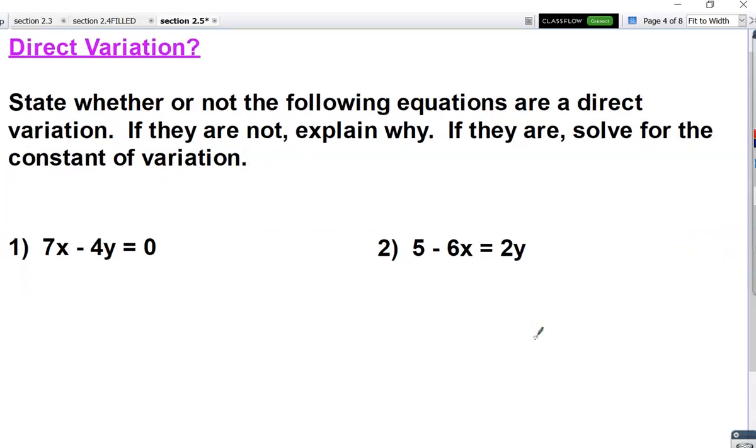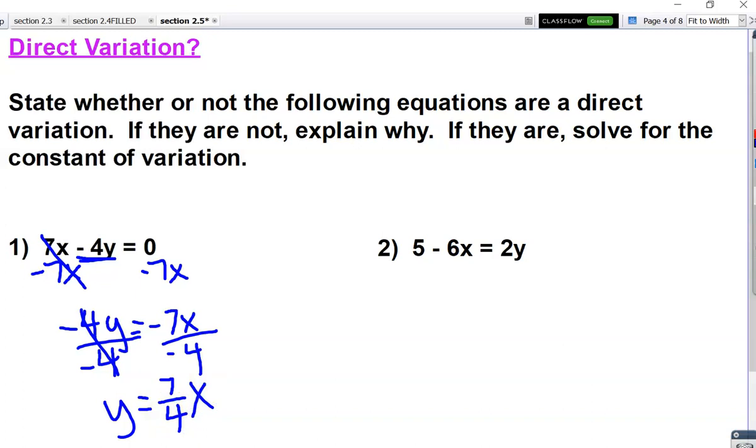Another thing you'll be asked to do is figure out, do I have a direct variation model or do I not? So for both of these questions, first figure out, is it direct variation? And if it is not, say why. If it is, solve for the constant of variation. So for both of these questions, you're basically just solving for y. So I'm going to subtract 7x from both sides. Don't forget the negative sign, because we were subtracting 4y. 0 minus 7x is negative 7x. I'm going to divide both sides by negative 4. Two negatives will cancel. y equals 7 4ths x. So yes, this is a direct variation equation because it can be written in the form of y equals ax. And so our constant of variation is 7 4ths.